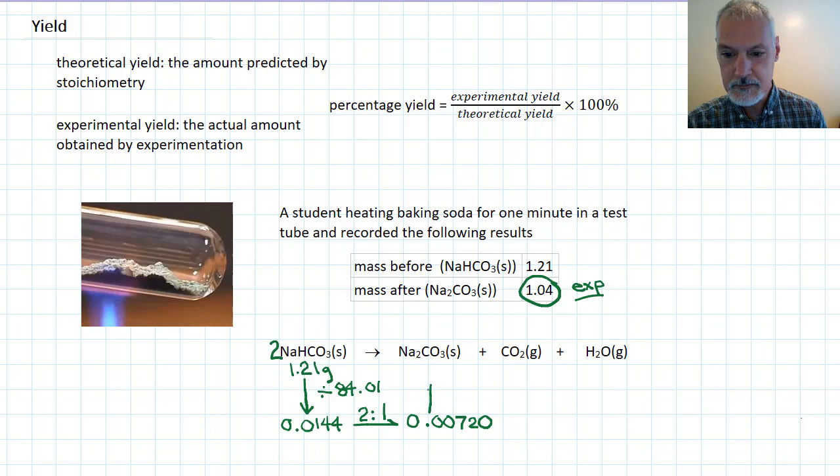And that's my number of moles. And now to convert this back into grams, I have to multiply by the molar mass of this chemical, which is 105.99. And that gives me 0.763 grams. So this number here, this represents what theory says I should get.